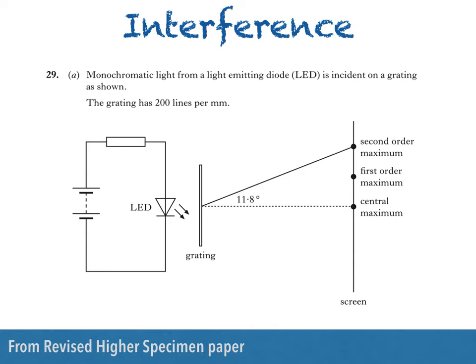Here's a question from the revised Higher specimen paper. Monochromatic light from a light emitting diode, LED, is incident on a grating as shown. The grating has 200 lines per millimetre.